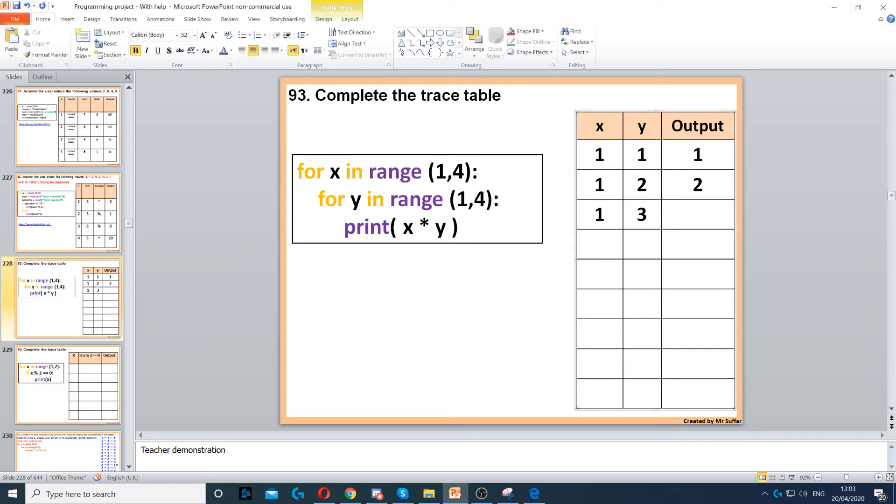We've reached the end of the inner loop because 4 does not count, it's 1 to 3 technically. So what we do now is we go back to the start of the for loop. Now x will change from 1 to 2, and then now we're back inside the inner loop.